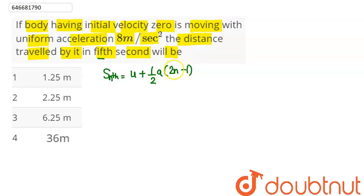a is the acceleration, and n is the second in which we want to find the distance covered. S_nth represents the total distance covered in that nth second. Here, the initial velocity given in the question is 0.